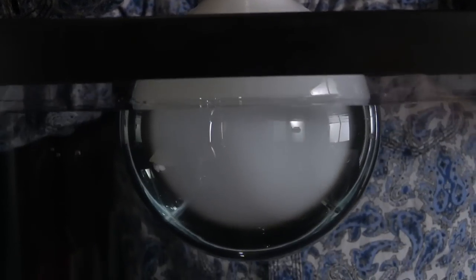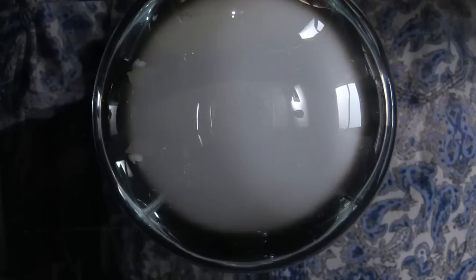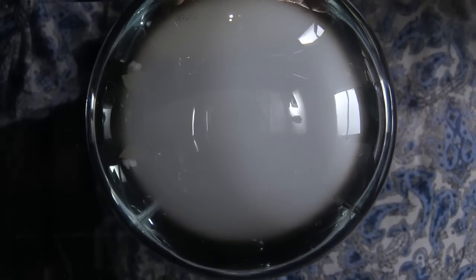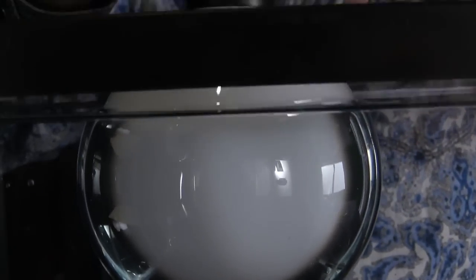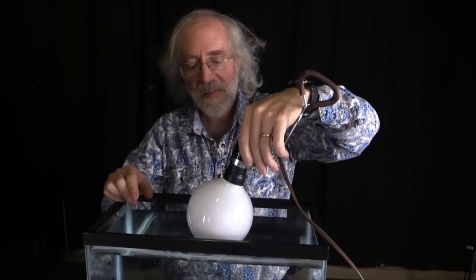And when I do that, you can see that I have this silvery look. Well, that silvery look is the reflection. It's the total internal reflection from the inside surface, as we talked about. And so I have a very different look for the light bulb.